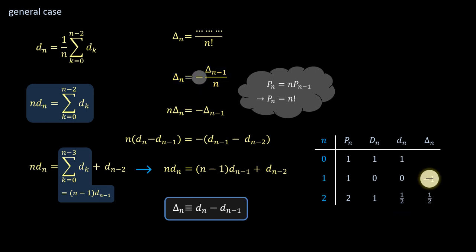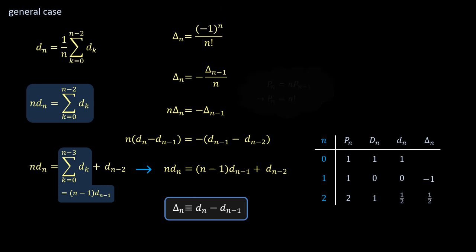The minus sign in the equation will produce alternating signs of consecutive terms. So the explicit expression for delta_n can now be revealed. It's (-1)^n divided by n factorial.